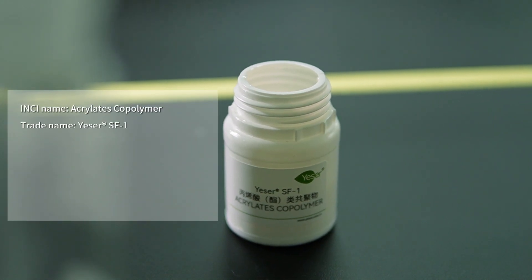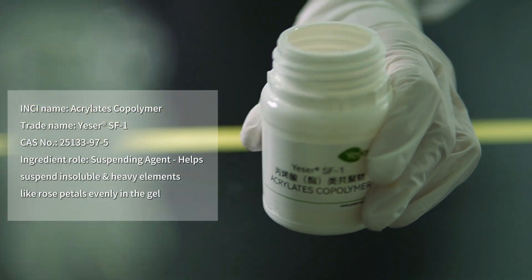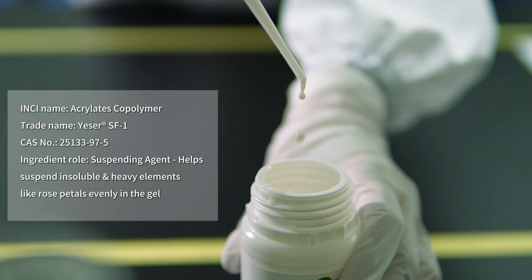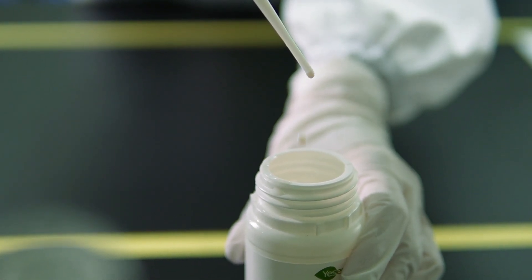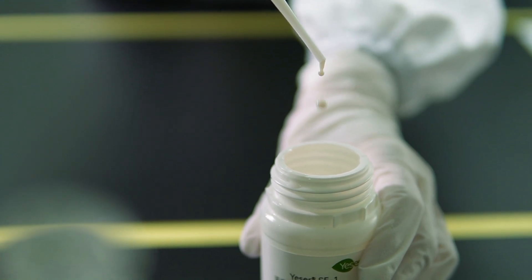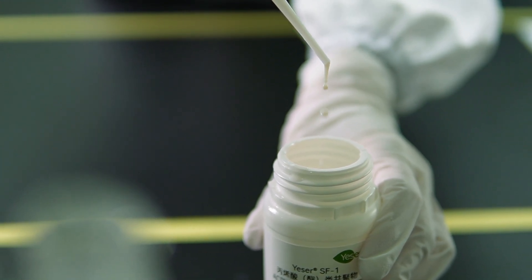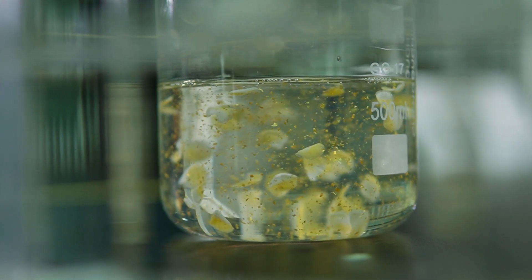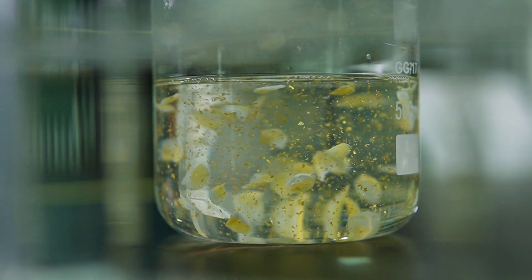Moving on to Phase D. We introduce Yeser SF1 Acrylate's Copolymer. This ingredient stands out for its remarkable suspending capabilities to hold heavy elements in liquid formulas. With 21 grams, or 7% of our total formula, it ensures that our bionic rose petals remain beautifully and stably suspended throughout the gel, creating the captivating visual effect unique to our Rose Petal Reverie Bath Gel.